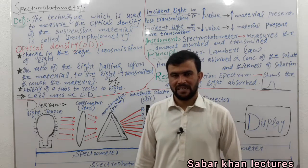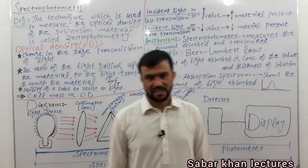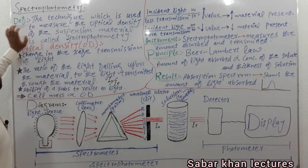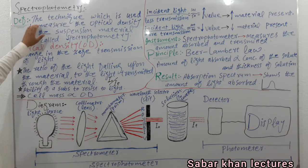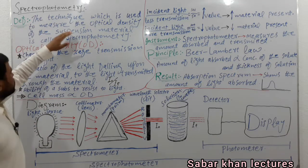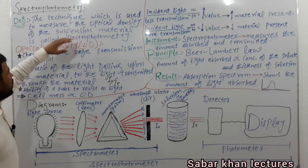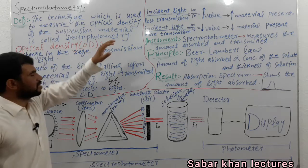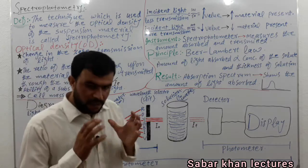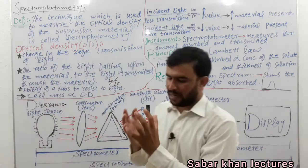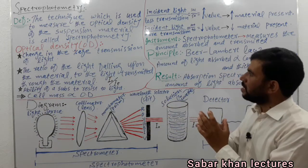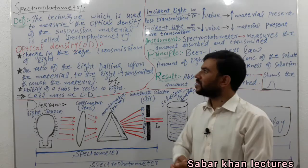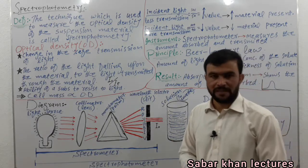Assalamu alaikum, this is Sabar Khan and the topic for today's lecture is spectrophotometry. First, we will come towards the definition. The technique which is used to measure the optical density of a suspension material is called spectrophotometry. For example, we have a suspension material and we measure its optical density — this will be called spectrophotometry.